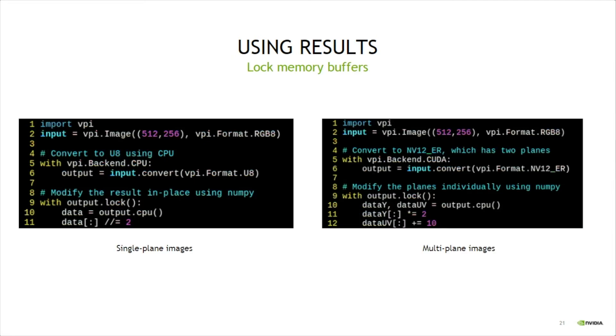At the end, we have to somehow access the pipeline results. This can be done by locking the memory object, as shown on line 9 on both scripts. This operation will make sure that the processing started on line 6 is completed, and then map its contents to host memory.